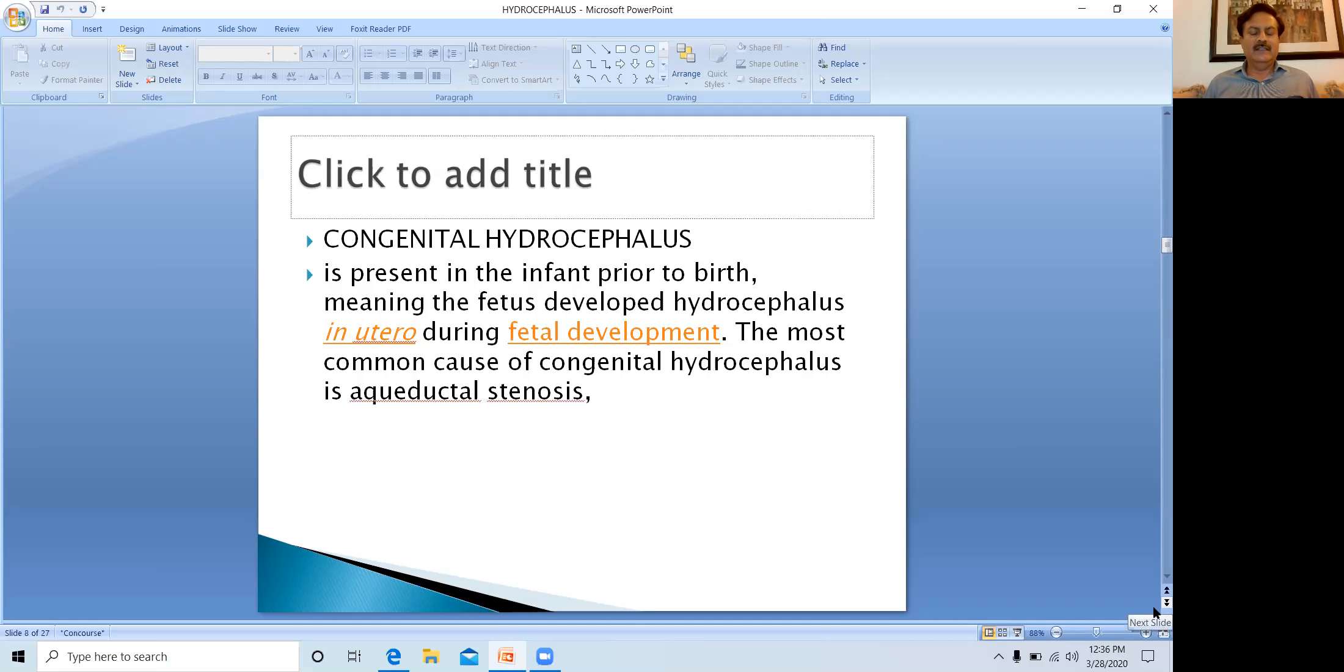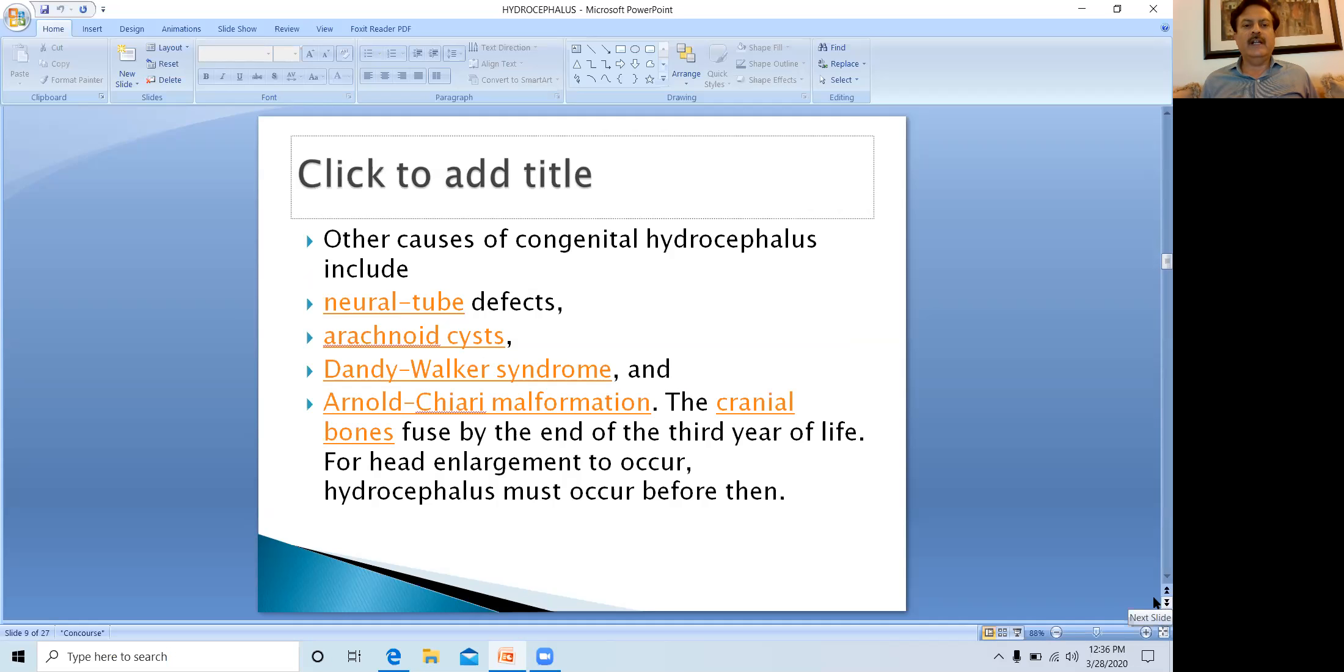Basically hydrocephalus is of two broad categories: congenital, which occurs in utero before the birth of the baby, or acquired after birth. Congenital hydrocephalus is present in the infant prior to birth. The most common cause of congenital hydrocephalus is aqueductal stenosis. Other causes include neural tube defects, arachnoid cysts, Dandy-Walker syndrome, and Arnold-Chiari malformation. The cranial bones fuse by the end of the third year of life, and for head enlargement to occur, hydrocephalus must occur before then.